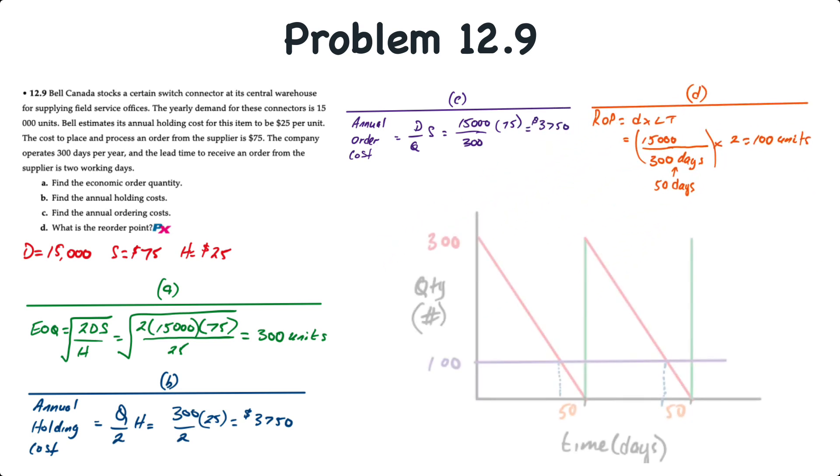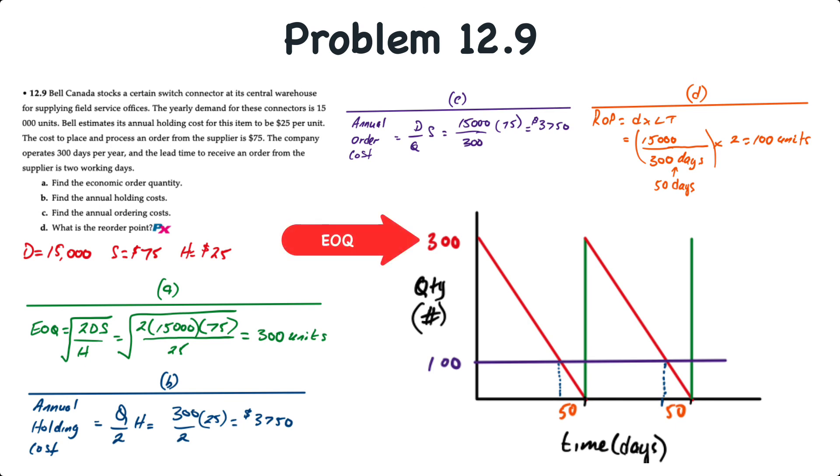If we were to see what this looks like visually, with an economic order quantity of 300 units, an order is placed for 300 units. And because one of the assumptions is that the inventory is drawn down linearly, then at 100 units, the system will trigger a reorder of the next 300 units, and there will be a 50-day gap between when the order is placed and when the order is received.